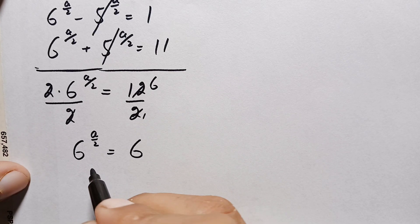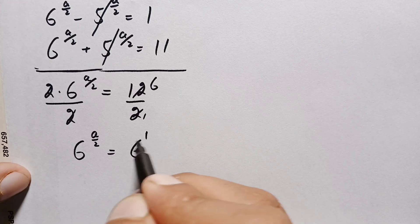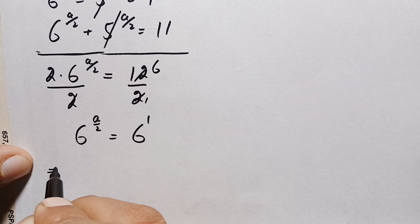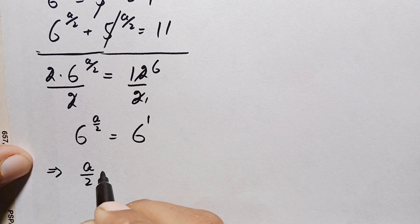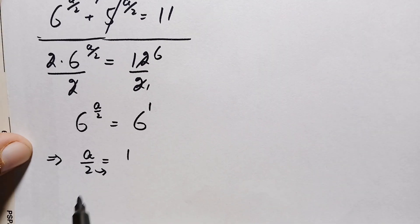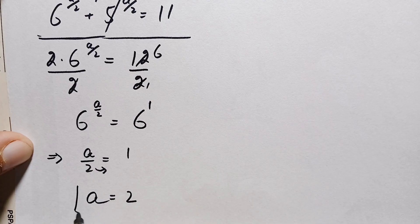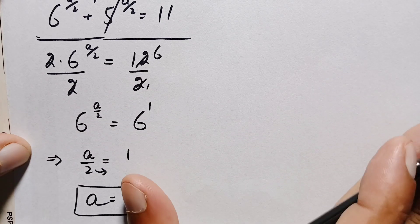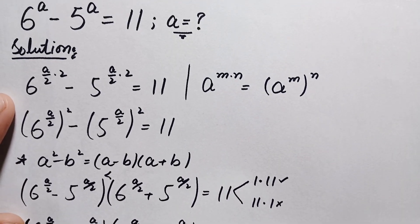Looking at both sides, the bases are the same. So we compare the powers: a/2 is equal to 1. Taking the 2 to the right hand side gives a is equal to 1 times 2, which is 2. So finally a is equal to 2 is our answer.